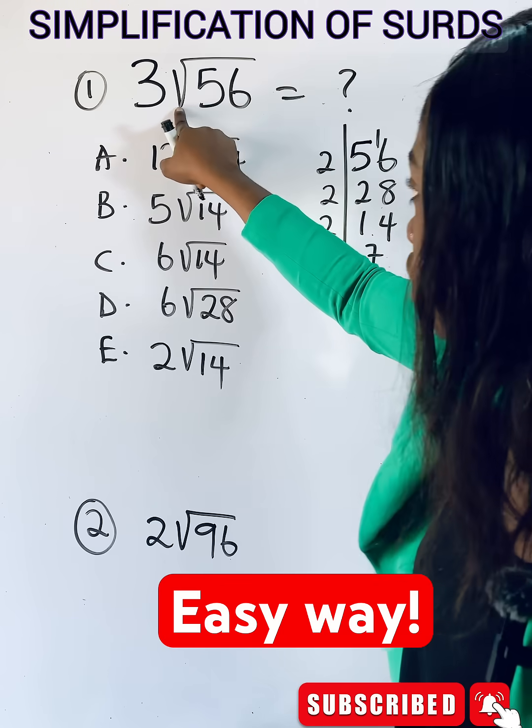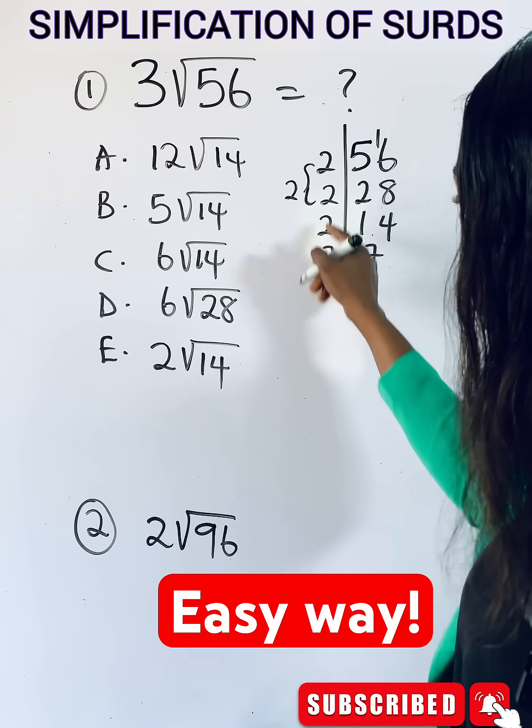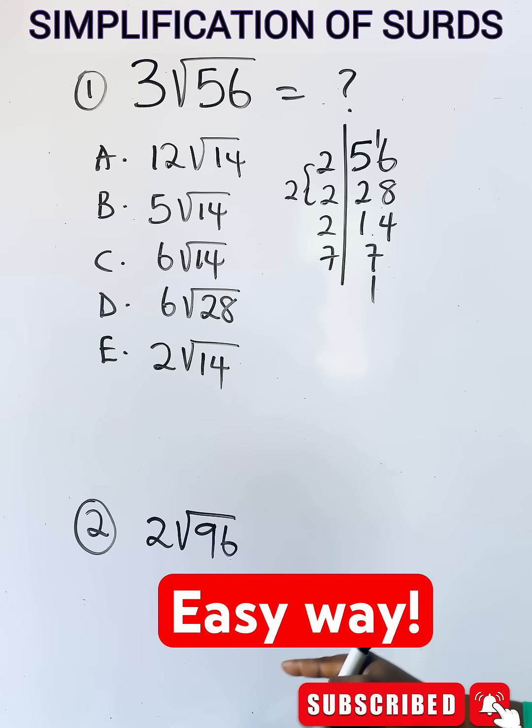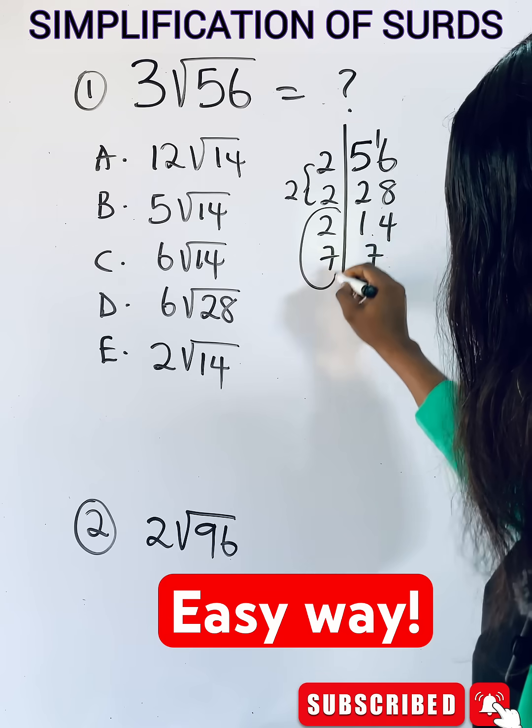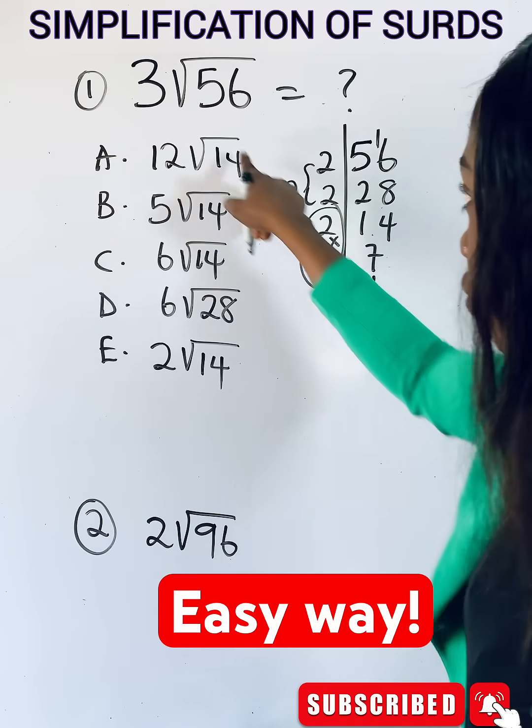Now because it's the square root, pair. So you pair this, you take one. These ones cannot be paired, so these ones that can be paired you will leave them inside the roots, then bring this out. So to simplify...